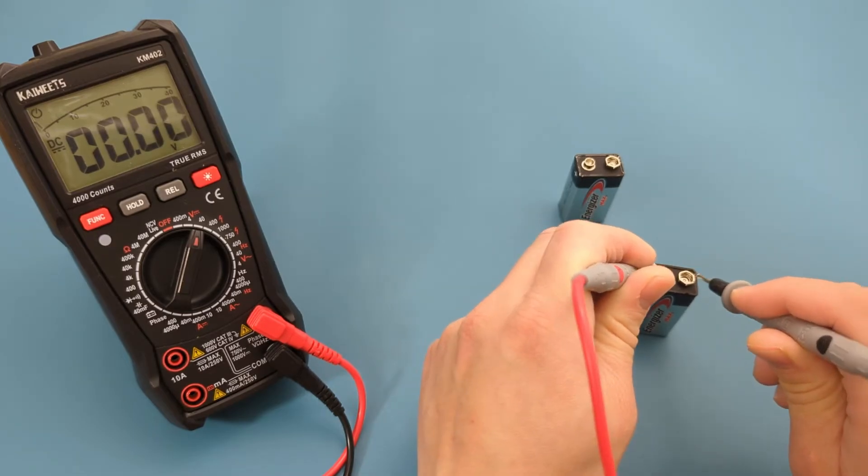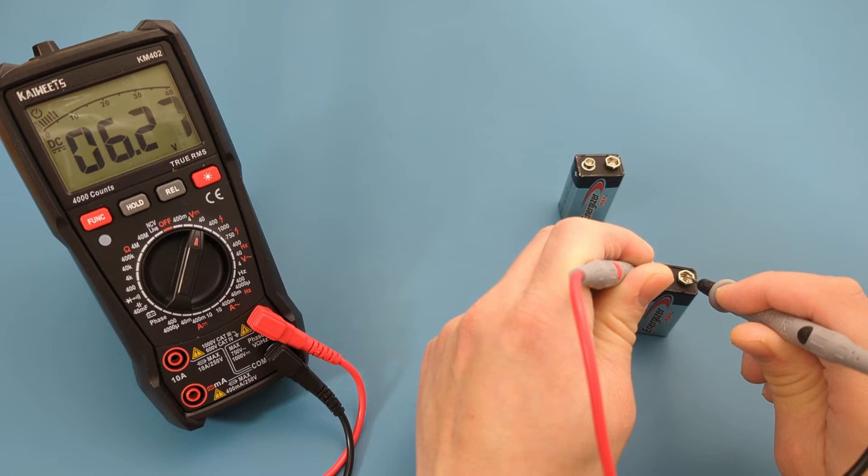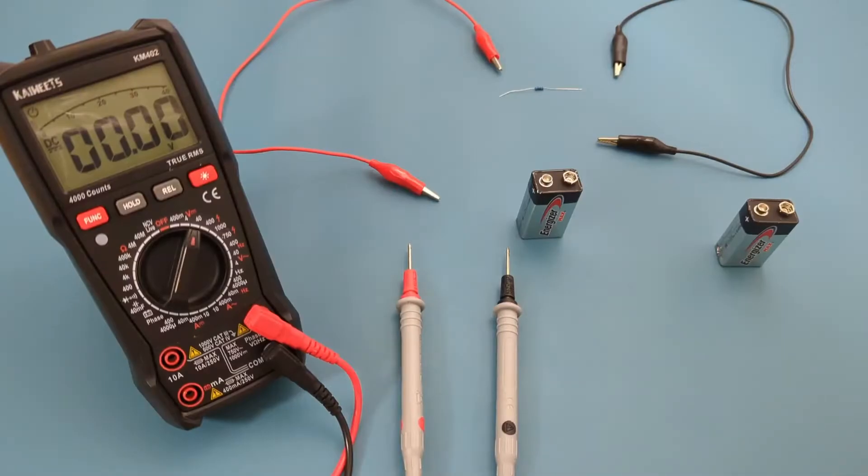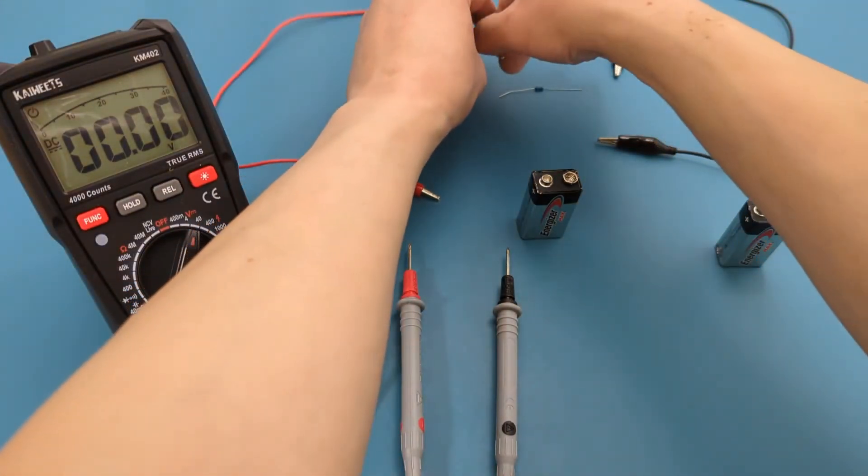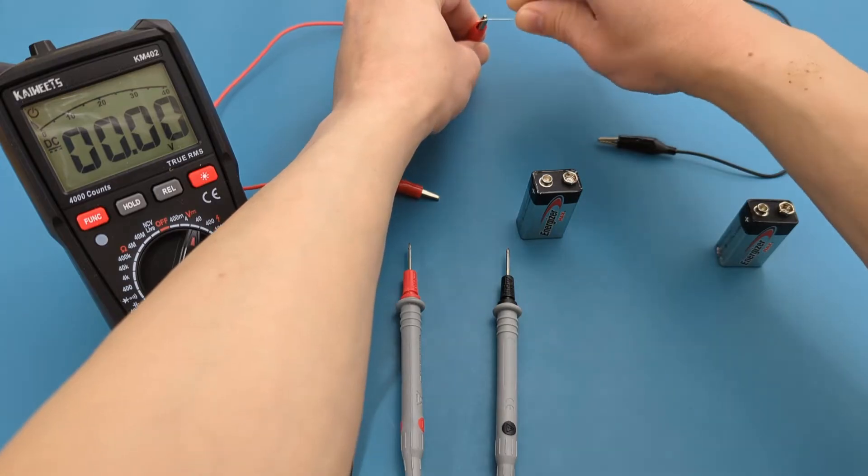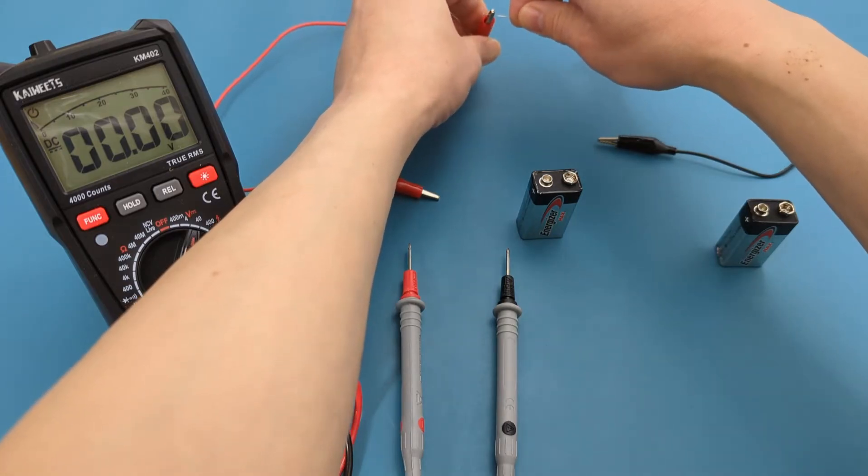A thorough battery test should be conducted while the battery is under load. This method involves attaching a resistor to the battery to enable the current flow. In this case, the resistor has a resistance of 1000 ohms.